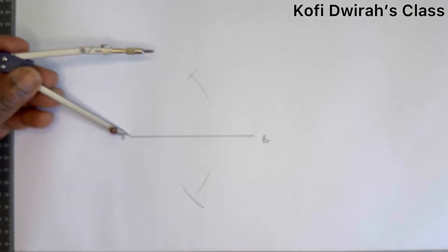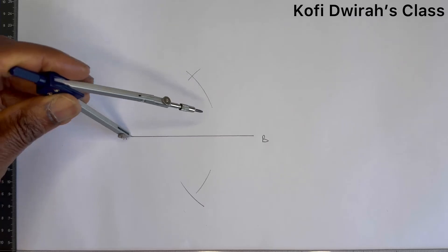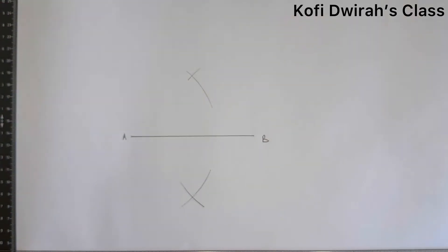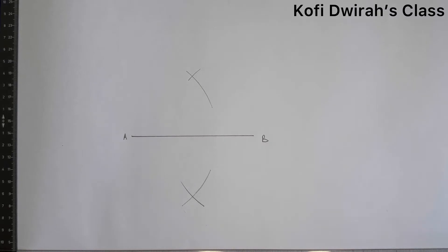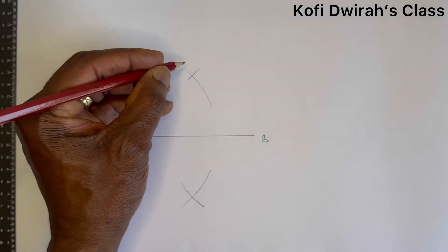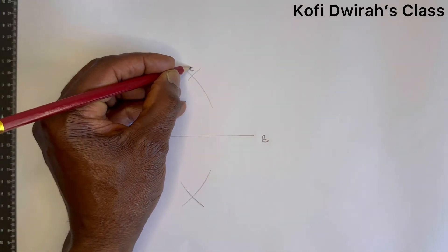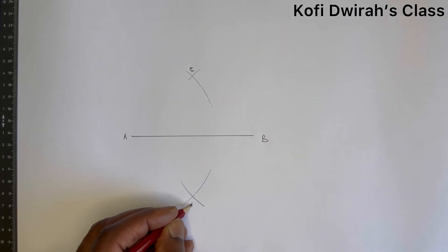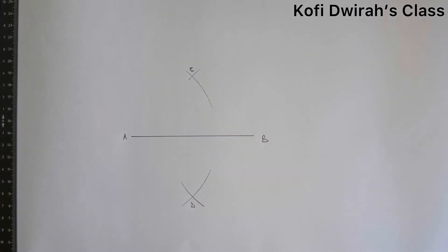Good, so now we have this point to be point C and this point to be point D. It's very simple. After getting these points, we proceed to draw the lines of the square.